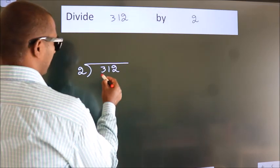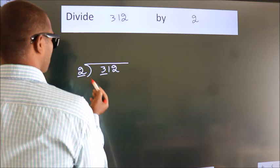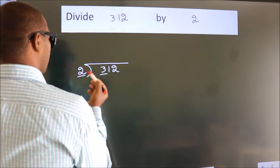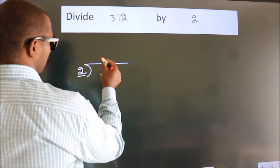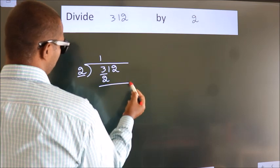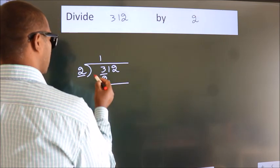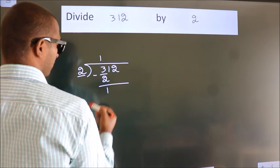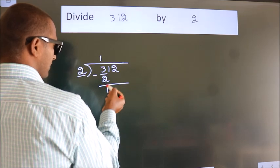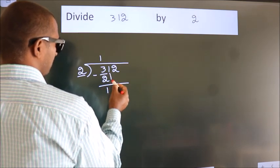Here we have 3, here 2. A number close to 3 in the 2 table is 2 times 1 is 2. Now we should subtract. We get 1. After this, bring down the beside number.